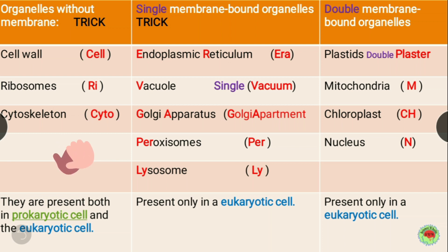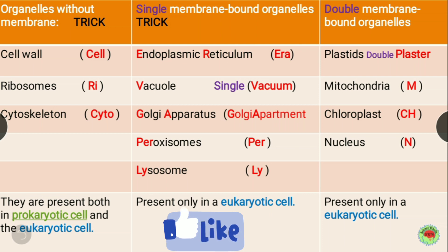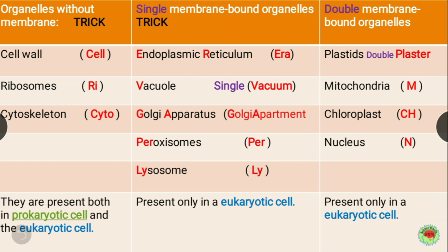Now for single membrane bound organelles, there are five: endoplasmic reticulum, vacuole, Golgi apparatus, peroxisome, and lysosomes. The trick uses — ER for endoplasmic reticulum, 'vacuum' for vacuole, 'Golgi apartment' for Golgi apparatus, 'per' for peroxisome, and 'lie' for lysosome. So the mnemonic is: 'Era single vacuum Golgi apartment per lie' — to remember all five single membrane bound organelles.